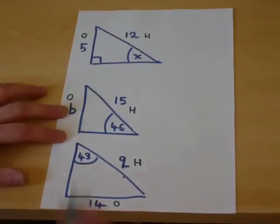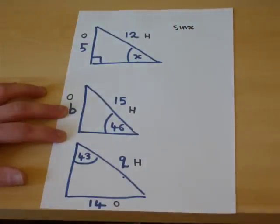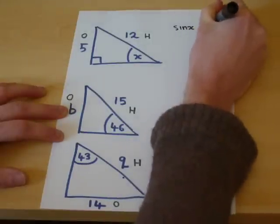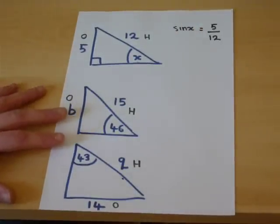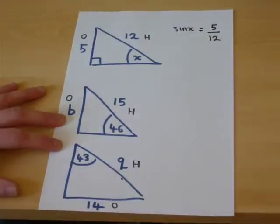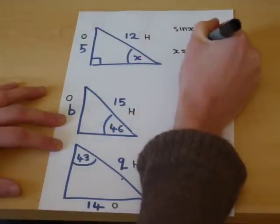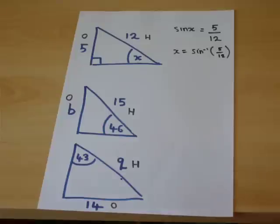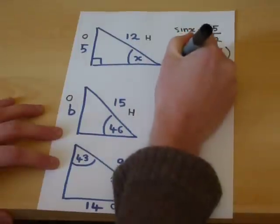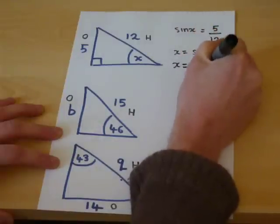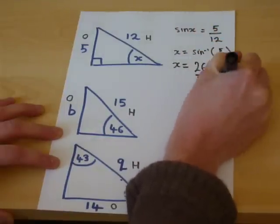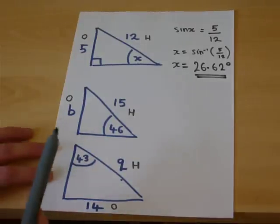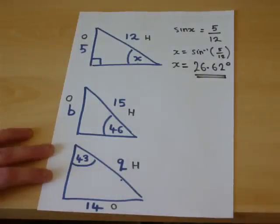Now, triangle 1. The equation is sine X is opposite over hypotenuse, so sine X is 5 over 12. To find X, we want to get rid of the sine next to it. On the calculator, there's a button called inverse sine. X equals the inverse sine of 5 over 12, which equals 26.62 degrees. It's important that if you cannot use a calculator to work out inverse sine when finding an angle, speak with a teacher who can talk you through the calculator use for your particular calculator.